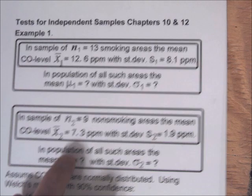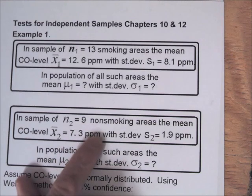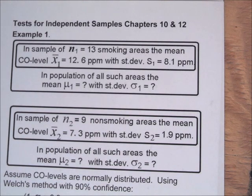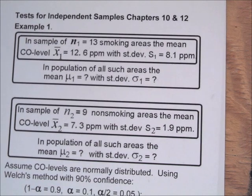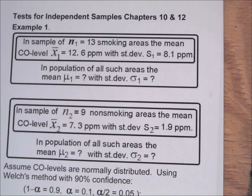We want to compare it to a sample of N2 equals 9 non-smoking areas — areas where smoking is not permitted — with a mean carbon monoxide level X2-bar of 7.3 parts per million and a standard deviation S2 of 1.9 parts per million, taken from a population where mu2 and sigma2 are both unknown.